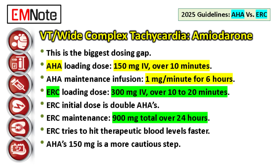For wide complex tachycardia — think ventricular tachycardia with a pulse — amiodarone is a go-to drug, and the dosing strategies look really different. The AHA loading dose is 150 milligrams intravenous amiodarone, usually given over 10 minutes. That 150 milligram bolus can be repeated if the VT returns. The maintenance infusion after that is 1 milligram per minute for the first six hours.